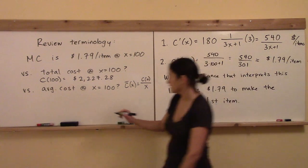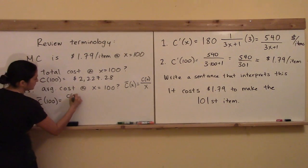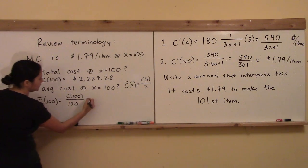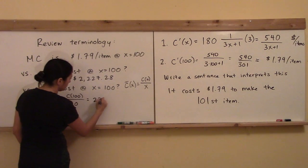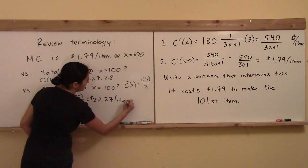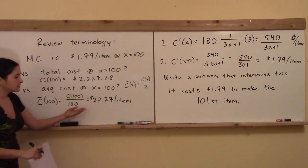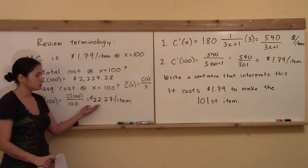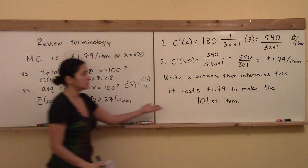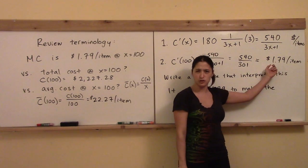So let me do that. Actually, I have c of 100 right there. So the average cost, c bar at 100, is going to be c of 100 divided by how many I'm making at a time, which is 100 items. And so I'm just going to divide this number by 100 right here. So I'm going to get $22.27 per item. So it says, on average, my average cost is that it's costing me $22.27 per item. And notice the units on this in dollars per item. That's the same as the units of the marginal cost in dollars per item.